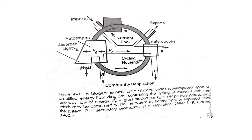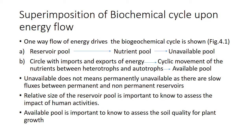Elements in nature are almost never homogeneously distributed, nor are they present in the same chemical form throughout the ecosystem. The reservoir pool — that portion which is chemically or physically remote from the organisms — is indicated by the box labelled nutrient pool, whereas the cycling portion is designated by the circle going from autotrophs to heterotrophs and back again. Sometimes the reservoir pool is called the unavailable pool, and the active cycling pool is known as the available pool.